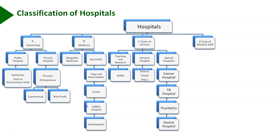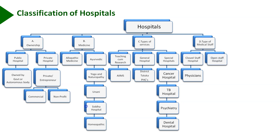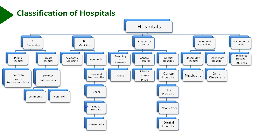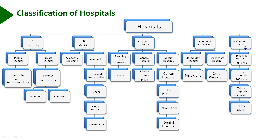Hospitals can also be classified based on type of medical staff involvement. Closed staff hospitals: physicians are held responsible for all medical activities in the hospital, including diagnosis, treatment, fee-paying and emergency. Open staff hospitals allow other physicians in the community to admit and treat patients. Hospitals are also classified by number of beds: teaching hospitals may have 500 beds, district hospitals 200 beds, Taluka hospitals 50 beds, and primary health care centers 6 beds.